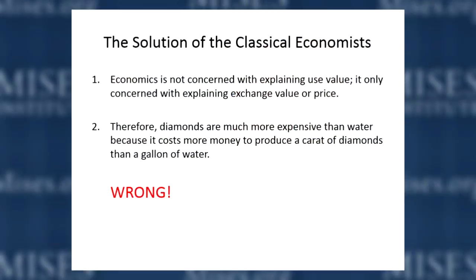These are the things Menger objected to, and they were wrong. Economics is concerned with explaining use value. The claim that diamonds are much more expensive than water because it costs more to produce a carat of diamonds than a gallon of water is clearly incorrect.